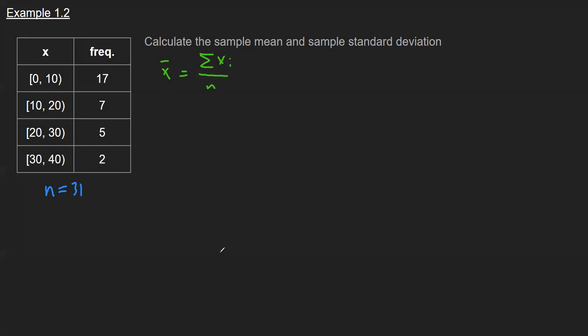Now, if I had the individual data values, I could just add them all up and divide by 31 and have the mean. In this particular example, I don't know what the individual values are — there are 17 of them anywhere between 0 and 10. So what we do is take the midpoint of each range. The length of each interval is 10, so the midpoint is halfway through, which is 5. From 0 to 10, the midpoint is 5. You can think of this as having 17 fives.